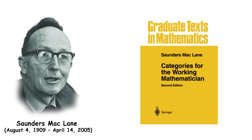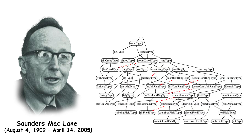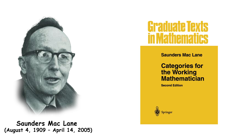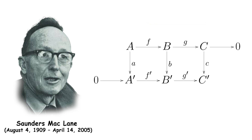Saunders Mac Lane was an American mathematician who co-founded category theory, a unifying framework for understanding mathematical structures and relationships between them. His book Categories for the Working Mathematician is a foundational text in the field. Mac Lane also made contributions to algebra and homological algebra.